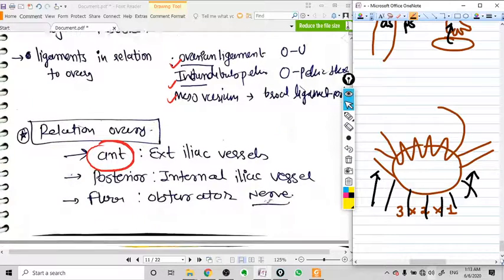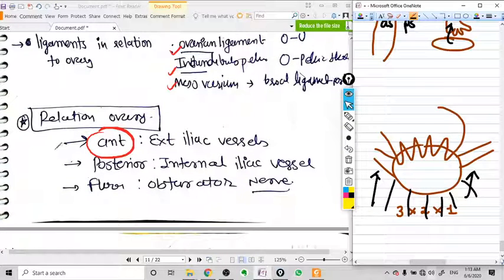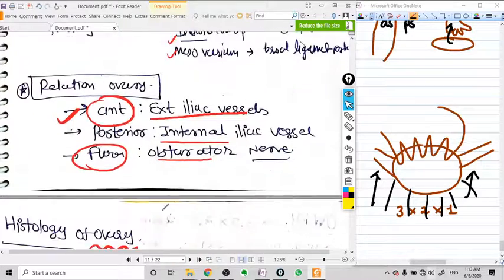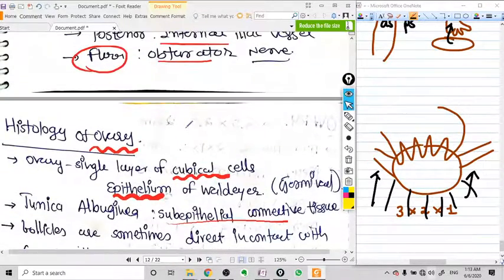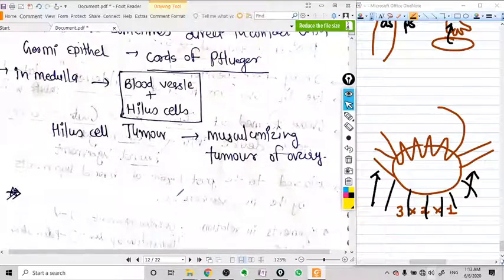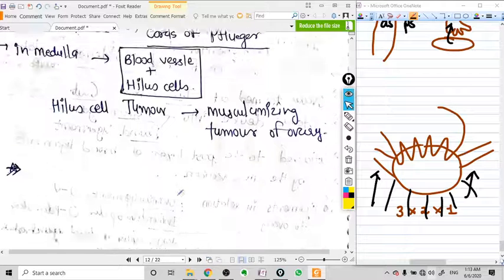What are the relations of the ovary? It's very important. Anteriorly it has external iliac vessels, posteriorly it has internal iliac vessels, and the floor of this ovarian fossa has obturator nerve. So by far, ovary is an important structure of the female. Now let's go on the models so we can learn it very practically.